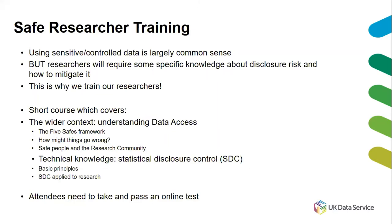The course will introduce you to the wider context: understanding data access, the five safes framework, how things might go wrong with data access, and the concept of safe people. It will also introduce the technical knowledge around statistical disclosure control — which is the process of ensuring that survey participants are not identifiable in the publication of research outputs. Attendees need to take and pass an online test afterwards. The good news is we have an extremely high pass rate, so it's not anything to really get too concerned about.